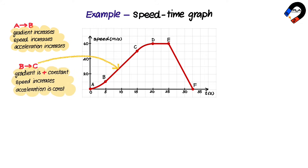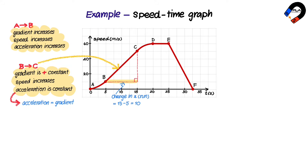We can find the constant acceleration by the gradient of the graph. We draw a right triangle: the change in x (run) is equal to 15 minus 5, which equals 10. The change in y (rise) is equal to 50 minus 10, which equals 40. Therefore, the acceleration is equal to 40 divided by 10, which equals 4 meters per second squared.